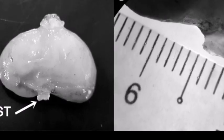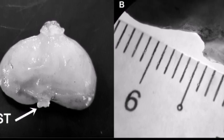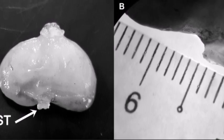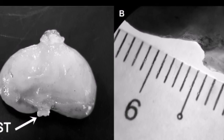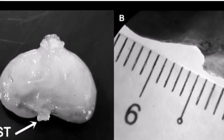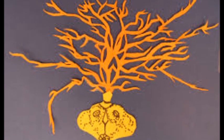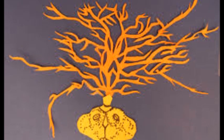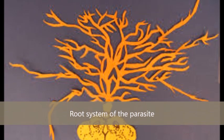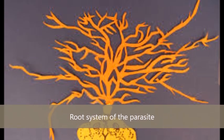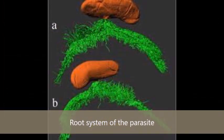Once on the shell of the crab, the cypris larvae metamorphose into kentrogon larvae, which begin to inject themselves into the crab's body via a needle-like cuticle called a vermigon, which is actually a protective cuticle around the parasite's cells. Once inside the host, the kentrogon larvae follow the circulatory system until they reach the abdominal cavity, where the larvae attach themselves to the host's tissues and begin to grow their rootlet system.